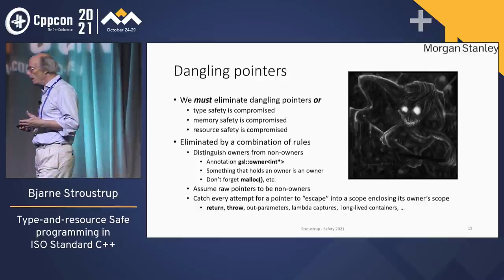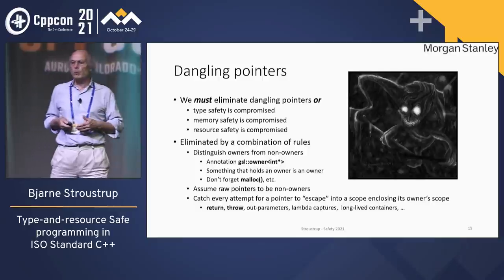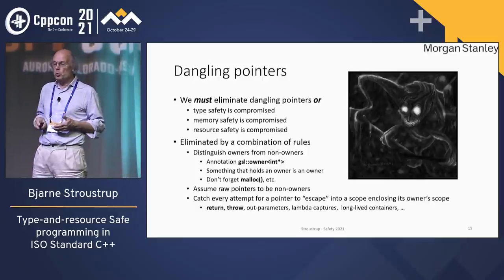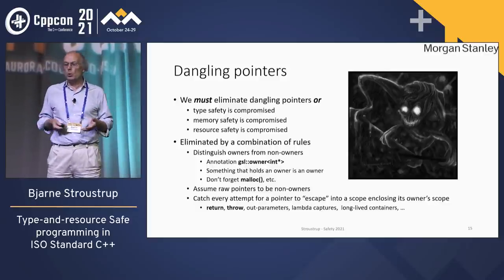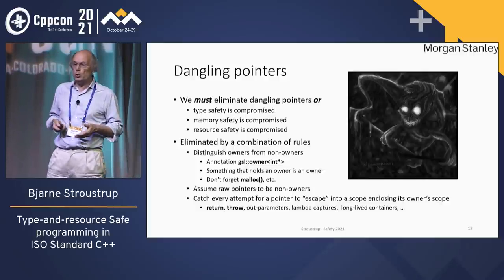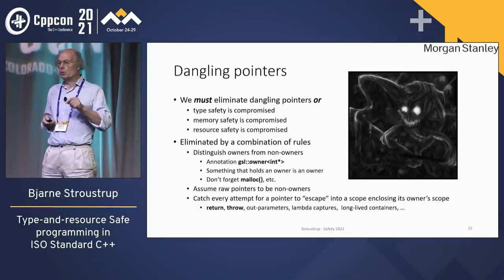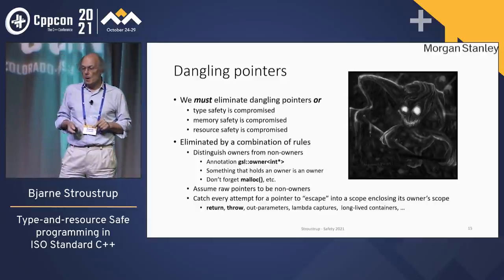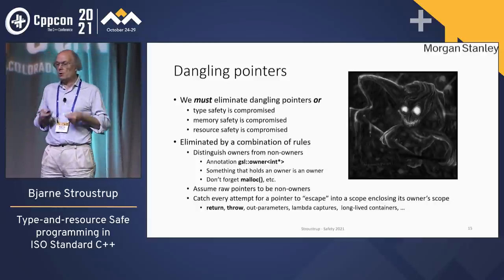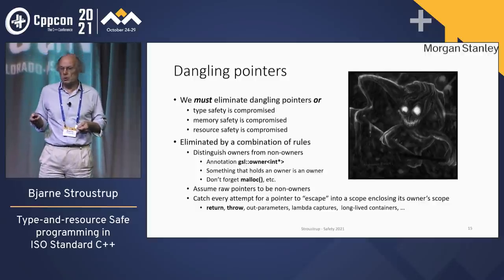We do that partly by using resource handles — things like vectors and smart pointers and threads, anything that holds something but knows how to destruct it. If you want to do that at lower levels, like in the implementation of vector, we have an annotation in the core guidelines called 'owner' that alerts the static analyzer that this is an owner. Not all resources are memory, and not even all memory comes out of new — don't forget malloc and its friends. You have to catch pointers trying to escape all kinds of things that refer to objects, not just T-stars.